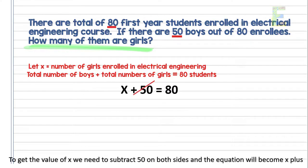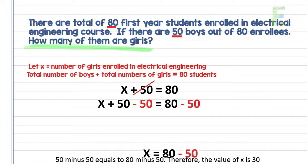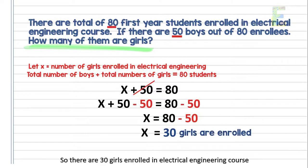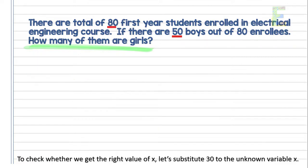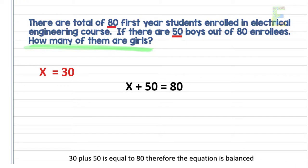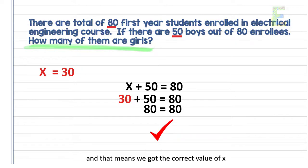To get the value of x, we need to subtract 50 on both sides. The equation becomes x plus 50 minus 50 equals 80 minus 50. Therefore, the value of x is 30, so there are 30 girls enrolled in electrical engineering. To check, we substitute 30 to the unknown variable x: 30 plus 50 is equal to 80. Therefore, the equation is balanced, and that means we got the correct value of x.